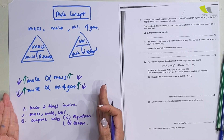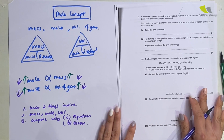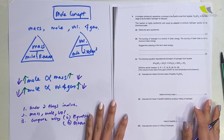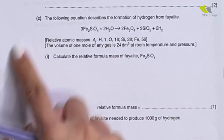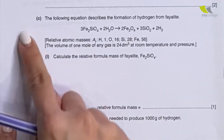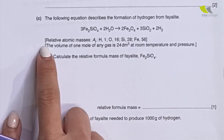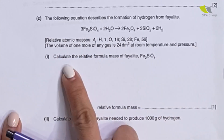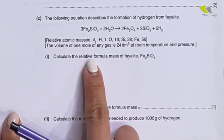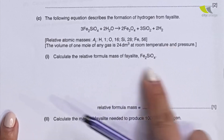Now let me show you how to use these three steps. Here they ask a typical mole concept question — they give you an equation, all the relative atomic masses, and ask you for the relative formula mass of a compound. In this case, the relative formula mass is 204.